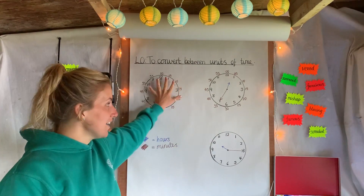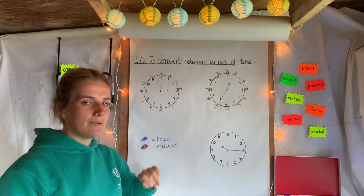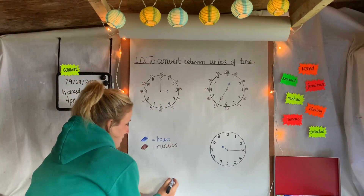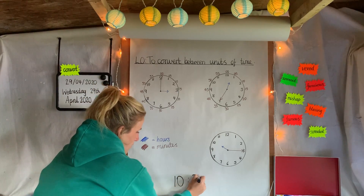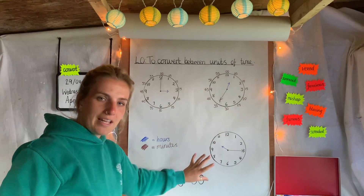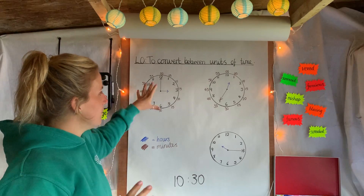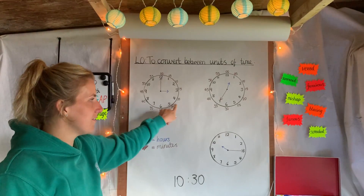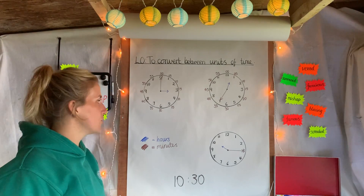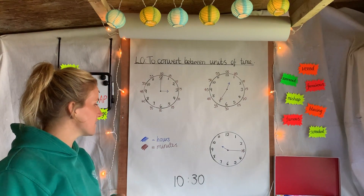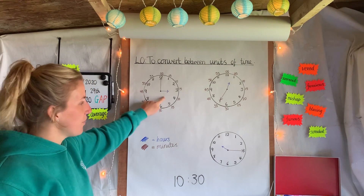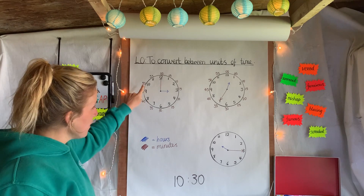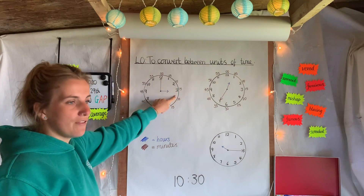Today we're looking at converting between analog and digital time. I've drawn an analog clock up here. Hopefully some of you can look at that clock and tell me exactly what time it is. The blue hand is the small hand and that's the hours, and then we've got a larger hand which is the minutes, done in brown.